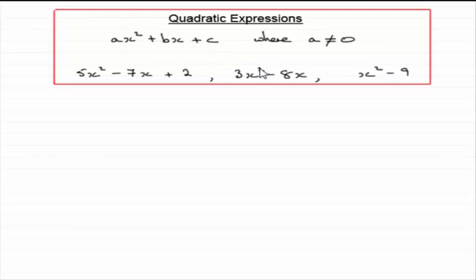Now, when we factorize any expression, I've always been trying to encourage you to always look for common factors. And in this kind of quadratic expression, we have a common factor x. But what about this one here — x squared minus nine — has no common factor. But what we're going to do in this tutorial is look at expressions like this.